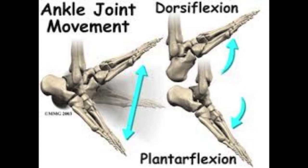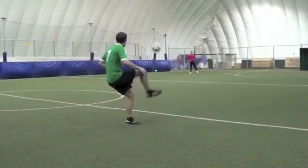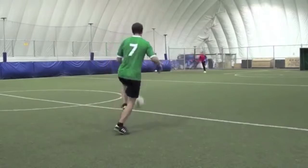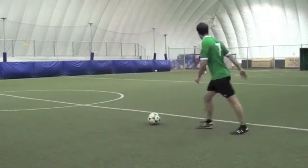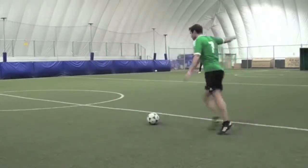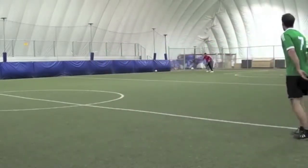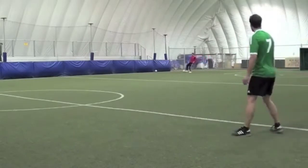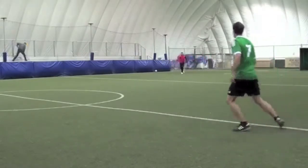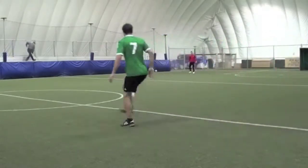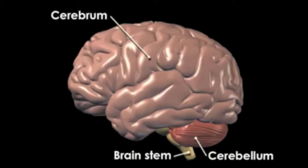In coordination with my skeletal system, my nervous system similarly interacts with my muscular system to tell my muscles what to do in order to properly receive the ball. Within my nervous system, the second largest part of the brain, the cerebellum, coordinates the movements of my skeletal muscles.